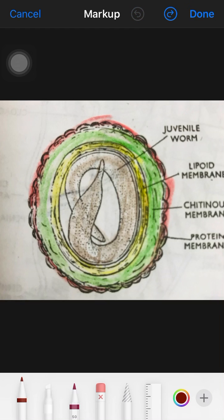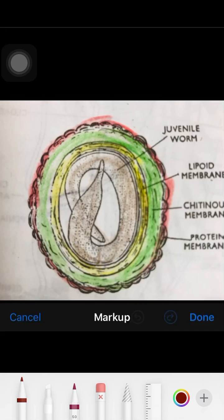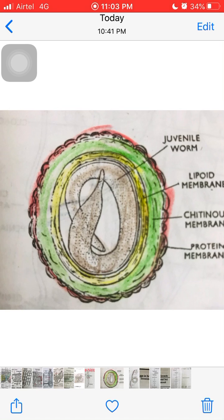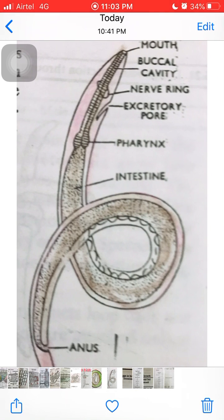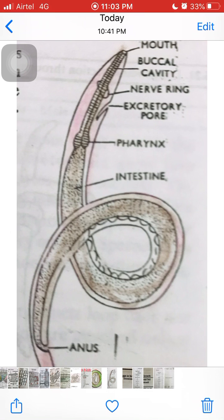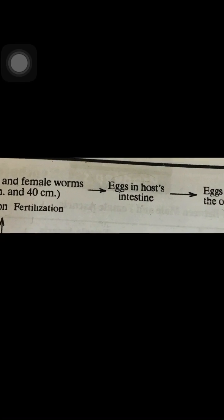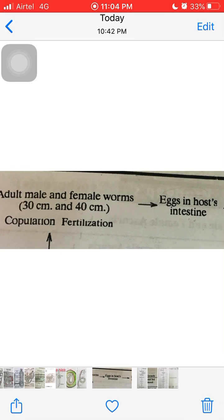Mitosis stops following embryonic development. In 10 to 14 days, a tiny larva develops — this is called the first juvenile stage. It grows for a week, then molts and sheds its cuticle to become the second juvenile stage. At this point it is almost completely developed, with most organs present except the reproductive organs, which still resemble an adult pattern.